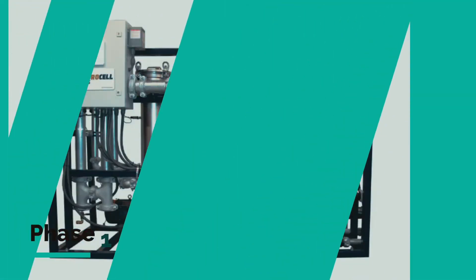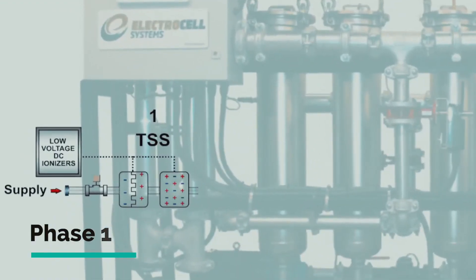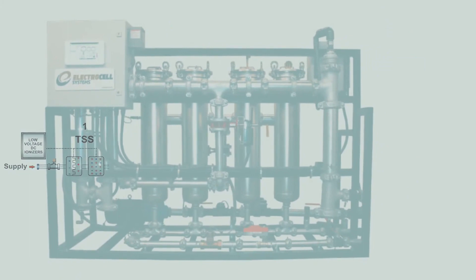Phase 1 of the three-step treatment process is the application of alternating positive and negative electrical charges to the suspended particles using a low-voltage DC ionizer. This makes the oppositely charged suspended particles attract to each other and, as a result, grow in size and weight.